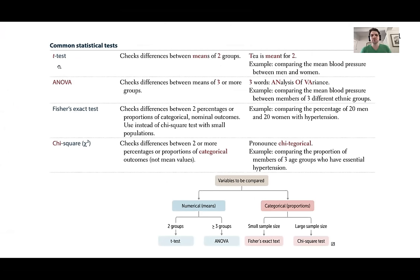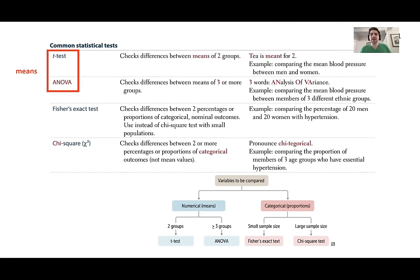A super easy way to define what statistical test you're looking at: T-tests and ANOVA are always looking for averages. If you're looking for an average with two variables, it's a t-test — T for two. If there are three or more variables, use ANOVA. All you need to do is look at whether they're asking for a mean or average — it's one of these two.